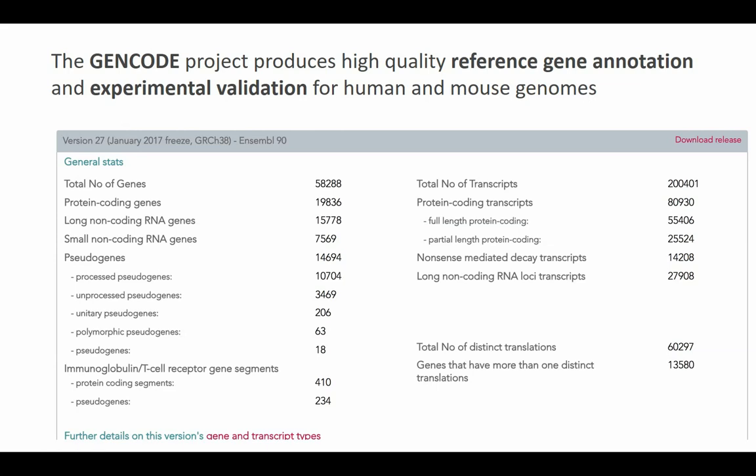All together, the total number of transcripts in the human genome is 200,000. Why is it four times more than the total number of genes? Because each gene often has more than one transcript - alternative splicing. So that's an important addition. And looking at last night's data, there's been another 10% addition to the number of transcripts, though not to the number of genes.